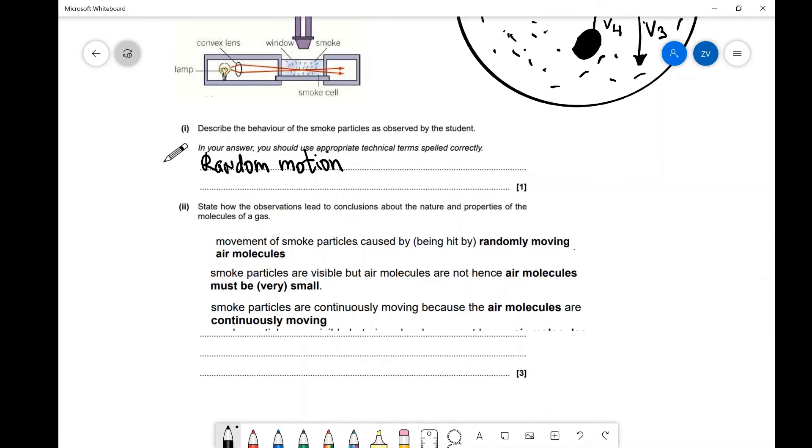Additionally, the smoke particles are visible because they are considerably bigger than the air molecules. Hence it says over here, air molecules are not visible. Hence, air molecules must be a lot smaller.